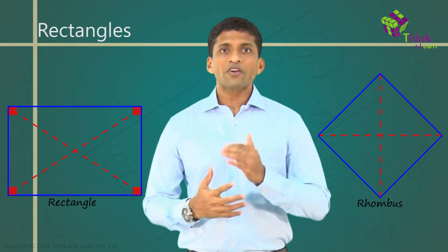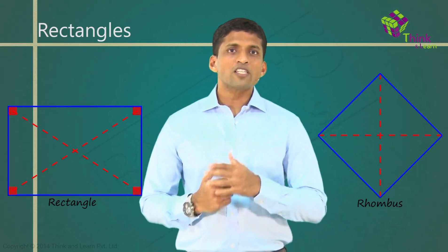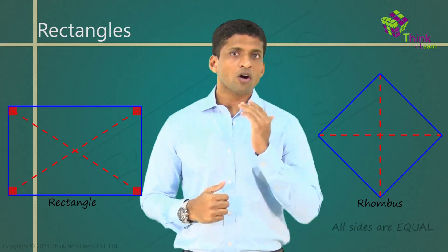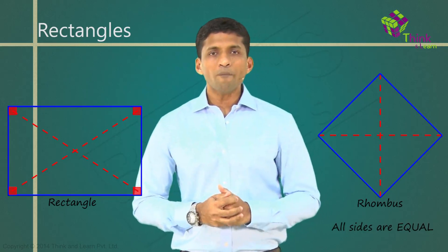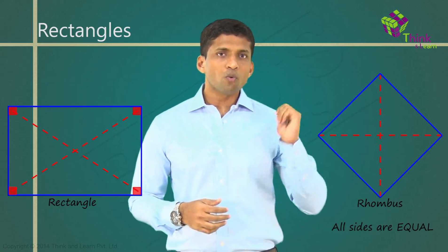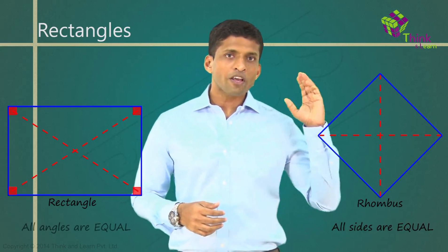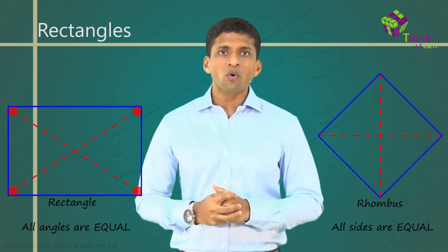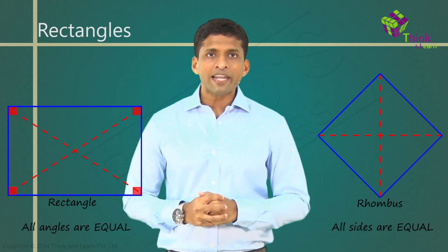Now, we have understood what is a rhombus — a rhombus is where all sides are equal. We have understood what is a rectangle — where all angles are equal and equal to 90 degrees.